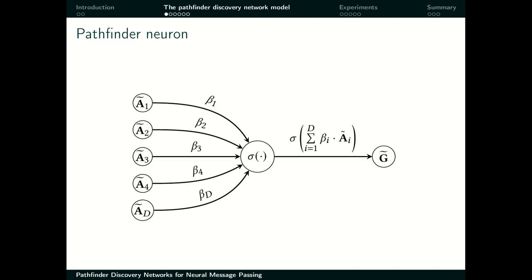The basic building block of our model is the pathfinder neuron. A pathfinder neuron takes the normalized adjacency matrices of a multiplex graph — the different layers are represented as adjacency matrices — weights them by learnable parameters (these are the betas), then applies a non-linear transformation and outputs a learned graph, the adjacency matrix of a learned graph, which we denote by capital G tilde. This is the most basic contribution of our paper and we reuse it as a building block for other neural network layers.